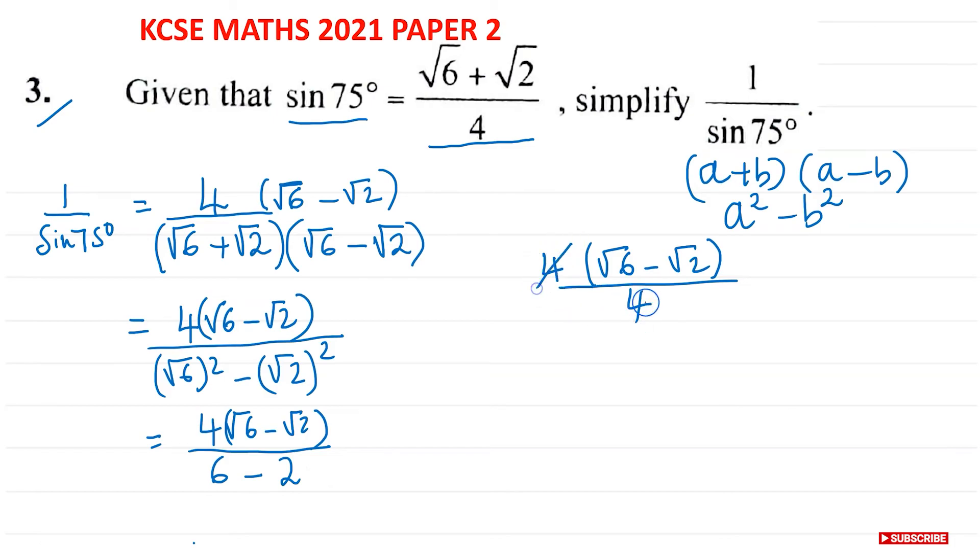So 4 and 4 will cancel. This means we have 1 over sine 75 degrees as equal to root 6 minus root 2.